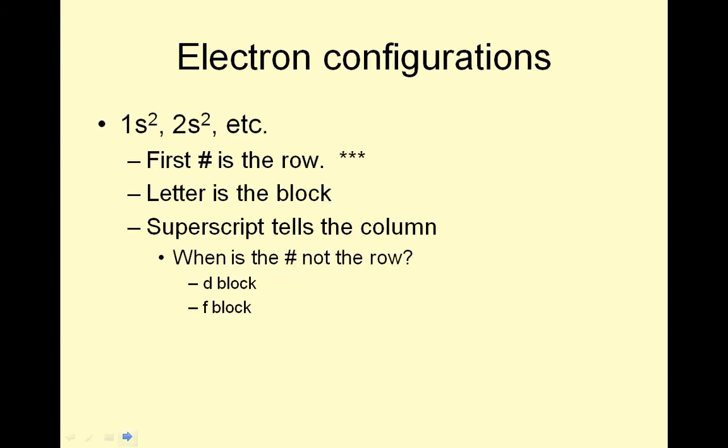Electron configurations. If you remember from before, this is our 1s², 2s², etc. The first number is the row. So what row is on - it's not really the row, it's the energy level. The letter is the block, and the superscript tells you the column.